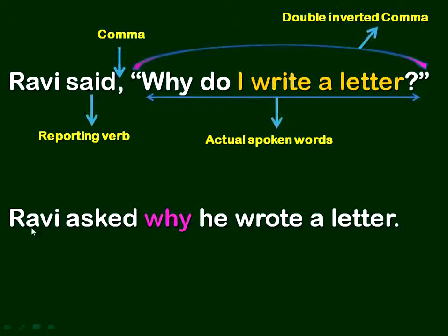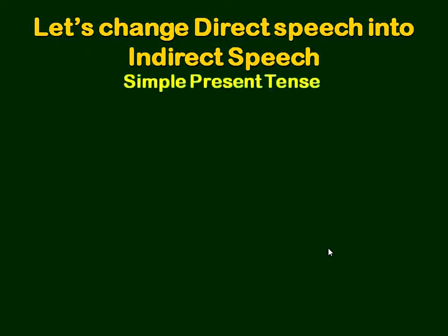First, you need to change the verb form — Ravi asked. Then 'why' is used as a conjunction. Then you need to change the next part into assertive: interrogative into assertive. 'I write a letter' in simple present becomes 'I wrote a letter' in simple past. Let us change direct speech into indirect speech with a few more examples.